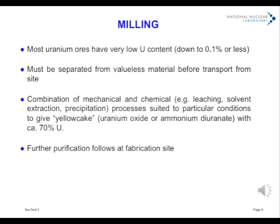The treated ore may be leached with sulphuric acid or, where it is effective, with a mixture of sodium carbonate and bicarbonate that leaves most of the impurities behind. The resulting slurry may be filtered or treated directly by ion exchange or solvent extraction. An acid leachate may first be partly neutralized to get rid of iron and other impurities. Finally, the uranium is precipitated as oxide or ammonium or sodium diuranate — yellow cake.